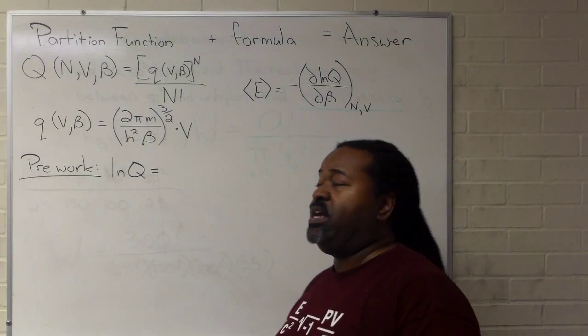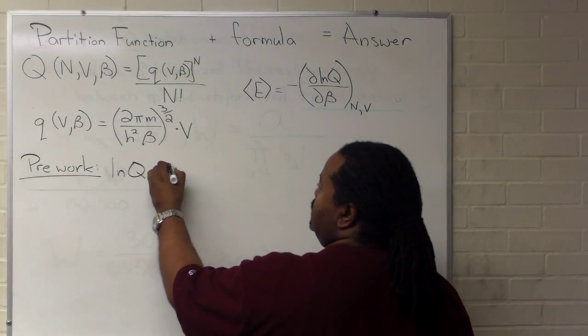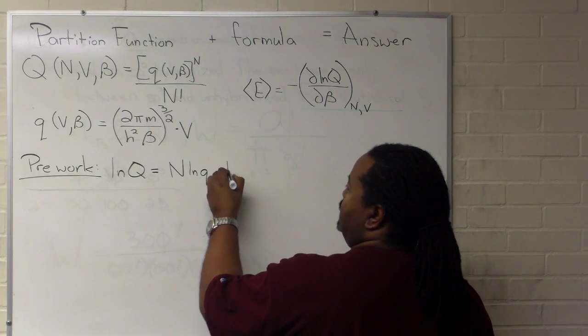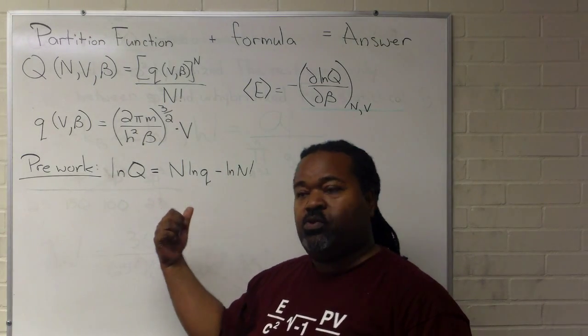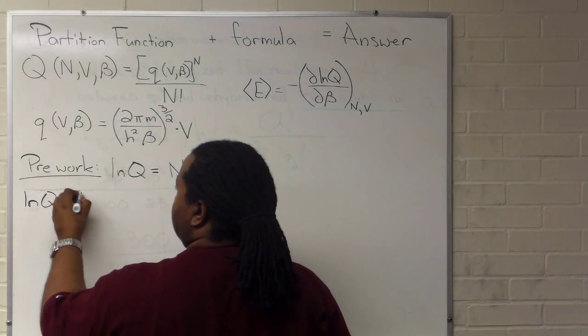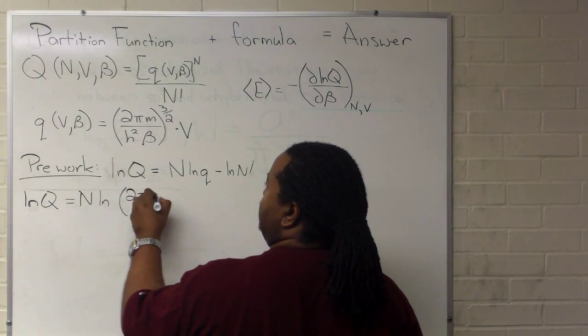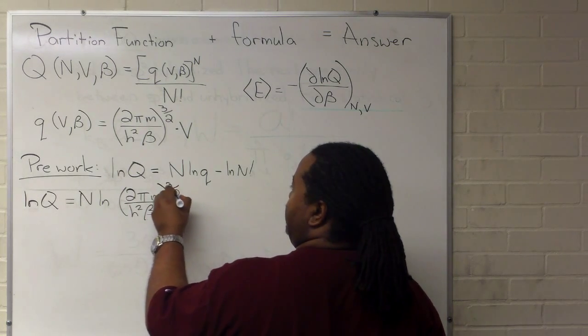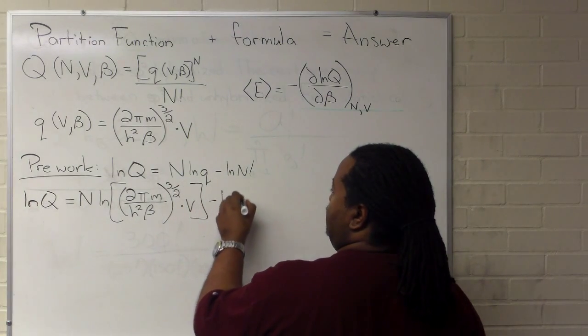Now we can use the rules of natural logs to decompose this expression into n ln of little q minus ln of n factorial. Next, we want to make a substitution for little q. So I'm going to write that out over here. So we will just substitute directly 2 pi m over h square beta to the 3 halves times V. That is all inside of that, minus ln n factorial.